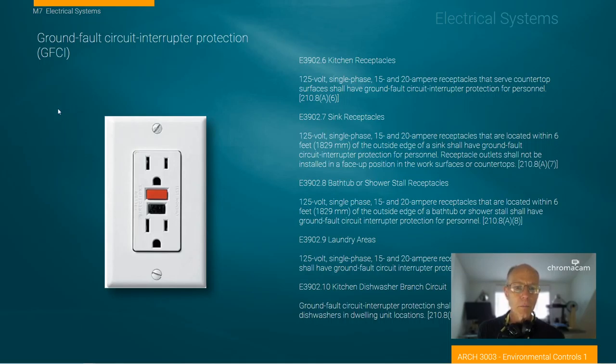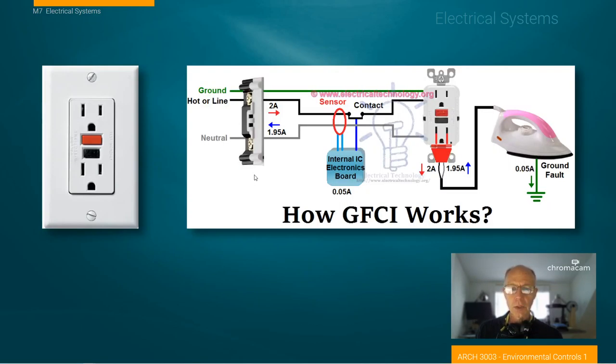So we've made important strides in the code to try and protect these especially important locations. So kitchens, around sinks, bathtubs, shower stalls, laundry areas. The dishwasher branch circuit is required. So I wanted to just take a minute so you understand this idea of how a ground fault circuit interrupter works.